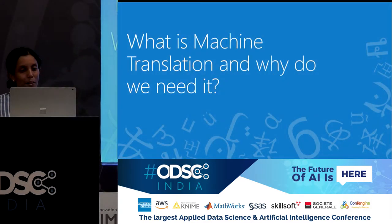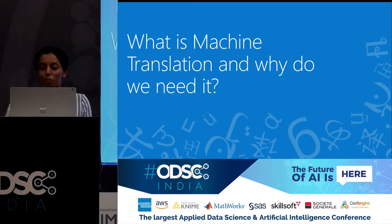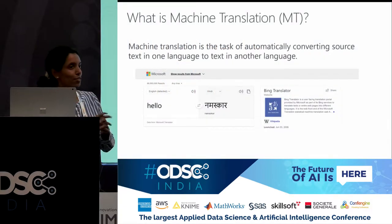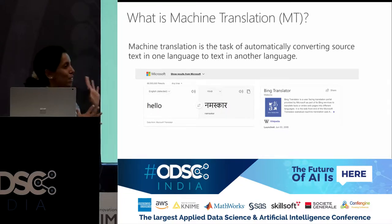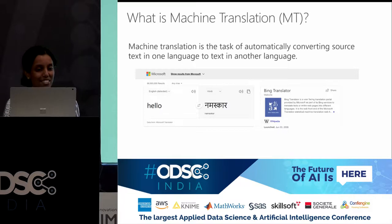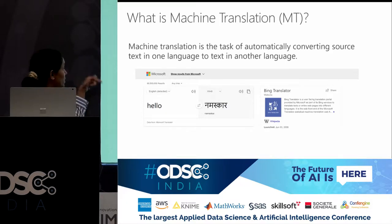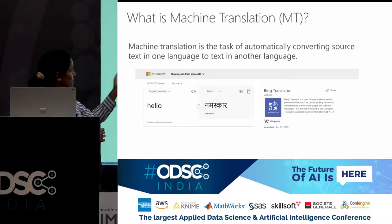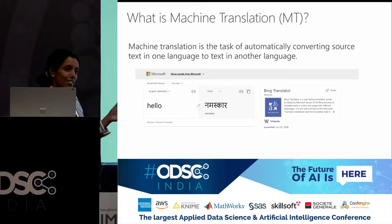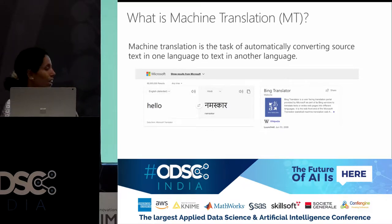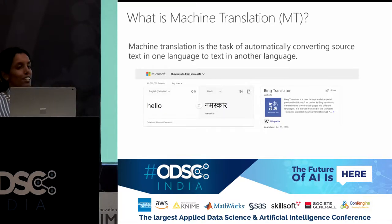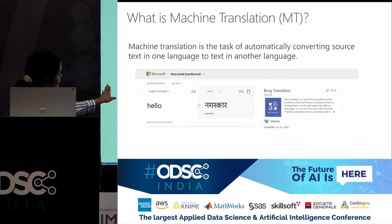So what is machine translation? Most of us have used either Google Translate or Bing Translate — that's one of the classic use cases. Here's a screenshot where I type the word 'hello', and it auto-detects it as English. Then I'm interested in how to say this in Hindi, so it gives me the Hindi Devanagari script as well as the transliterated version. So essentially, machine translation is the task of automatically converting text from one source language to a target language.